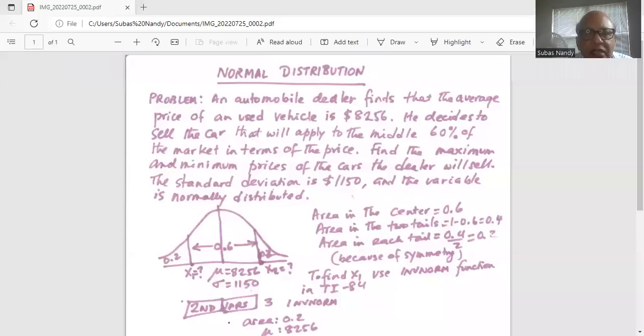An automobile dealer finds that the average price of a used vehicle is $8,256. He decides to sell the car that will apply to the middle 60% of the market in terms of the price. Find the maximum and minimum prices of the cars the dealer will sell. The standard deviation is $1,150 and the variable is normally distributed.